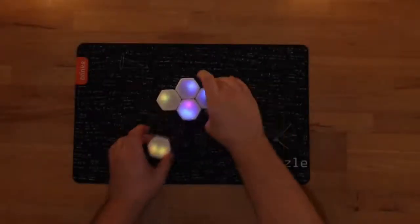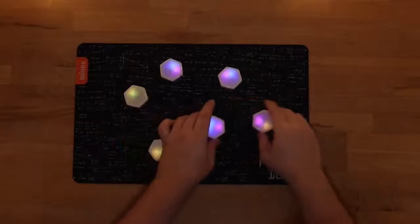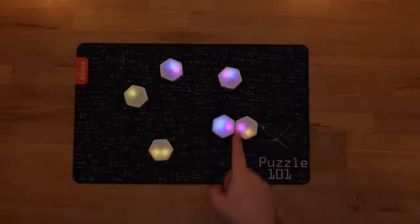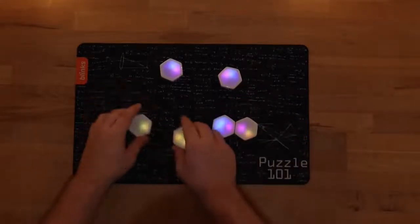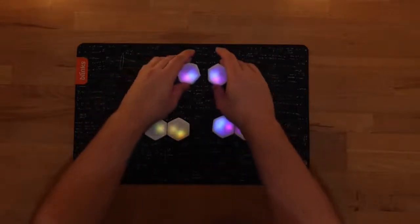To solve the puzzle, the blinks must be assembled so that all colored sides of a blink are touching the side of another blink with a matching color.